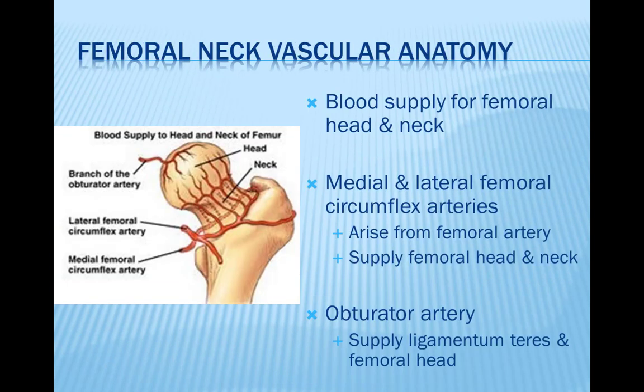Regarding vascular anatomy: in 60% of patients, the medial and lateral femoral circumflex arteries originate from the profunda femoris artery. Most of the blood supply of the femoral head comes from the lateral femoral circumflex artery, which gives rise to three or four branches — the retinacular vessels — that run posteriorly and superiorly along the femoral neck until they reach the cartilaginous border of the head. The obturator artery gives rise to vessels within the ligamentum teres, and an ascending branch of the medial femoral circumflex artery supplies the greater trochanter and anastomoses with the lateral femoral circumflex artery.